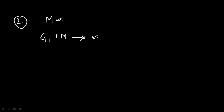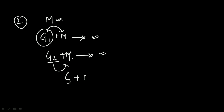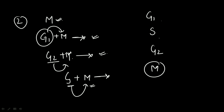The second conclusion: whenever any cell is mixed with the M phase (the mitotic phase), all of those cells get converted into the M phase. When G1 is mixed with M, all G1 cells enter the M phase quickly. When G2 is mixed with M, all G2 cells also enter the M phase. When S phase and M phase are mixed, all cells in S phase enter the M phase as well.